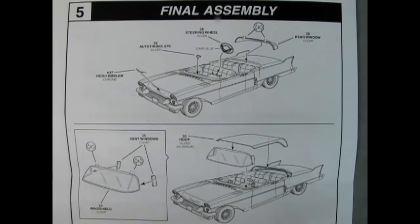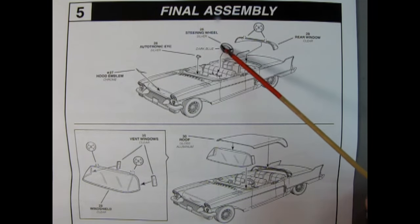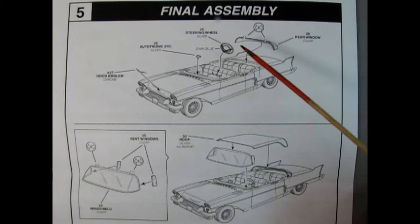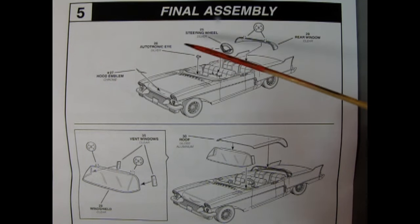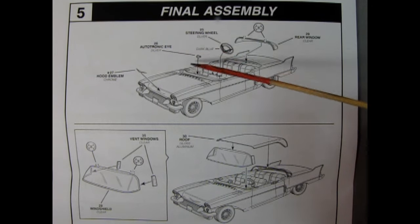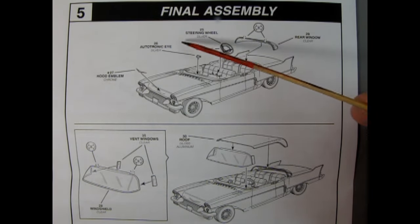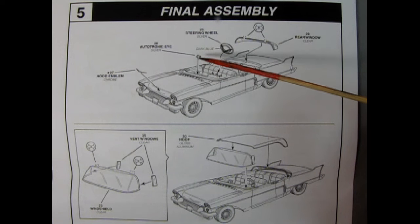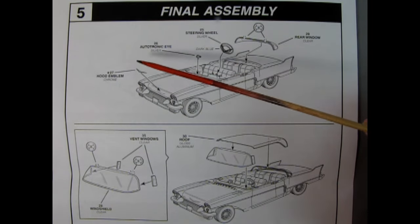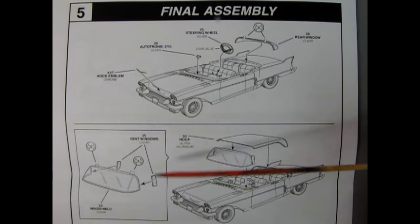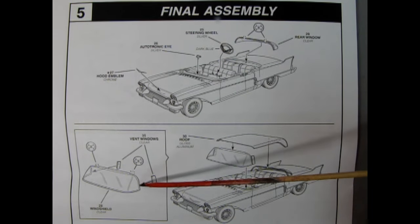Panel 5 shows our final assemblies. Here we have our rear window being glued into place along the back. Then we have our steering wheel being glued to the steering column. There is an autotronic eye. Now these things were used back in the day for parking lights. So the parking light would be up here and as you came up to the traffic light, the colors would reflect down into here and then you could see without having to look up at the traffic light when the light was going to change or whatever color it was. We also have a hood emblem here being glued to the front.